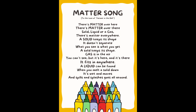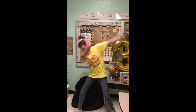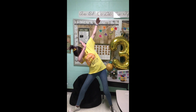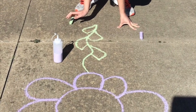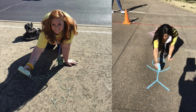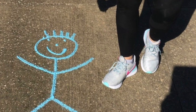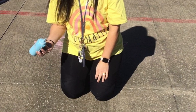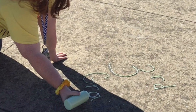There's matter over here, there's matter over there. Solid, liquid, or a gas, there's matter everywhere. A solid keeps its shape, it doesn't separate. What you see is what you get, a solid keeps its shape. Gas is in the air, you can see it's here, it's there, it fits everywhere. A liquid can be found. It's wet, it's smooth, it spills, it splashes, it can move all around.